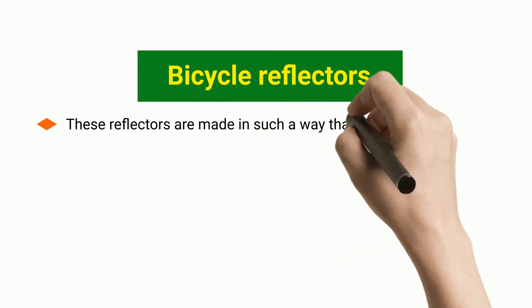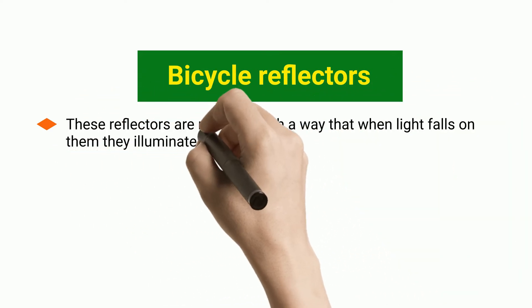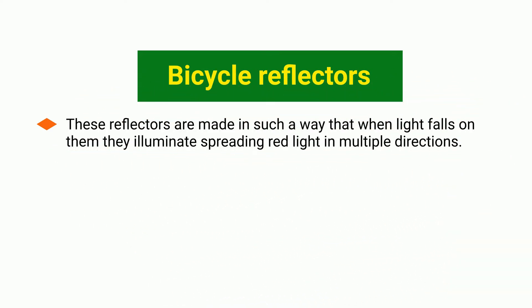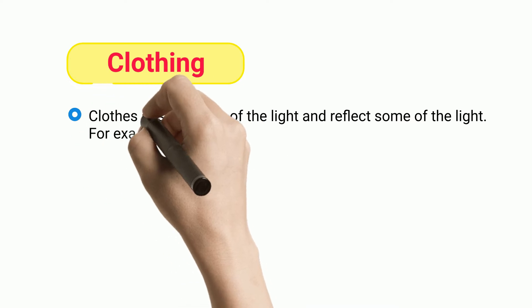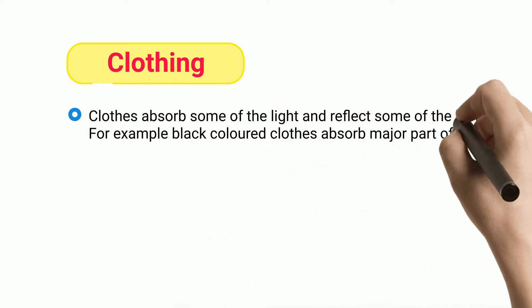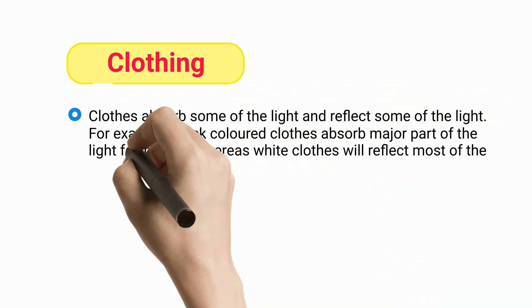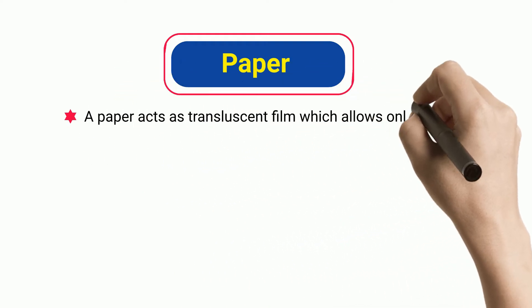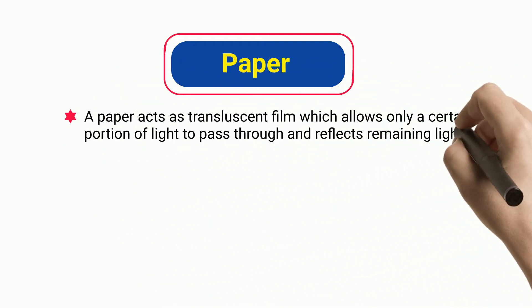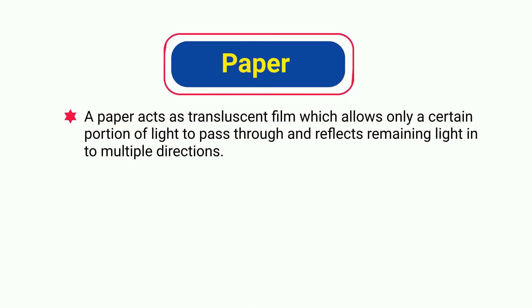Bicycle reflectors: these reflectors are made in such a way that when light falls on them, they illuminate, spreading light in multiple directions. Clothing: clothes absorb some of the light and reflect some of the light. For example, black colored clothes absorb the major part of the light falling on them, whereas white clothes reflect most of the light. Paper: paper acts as a translucent film which allows only a certain portion of light to pass through and reflects the remaining light in multiple directions.